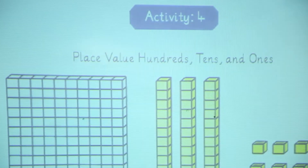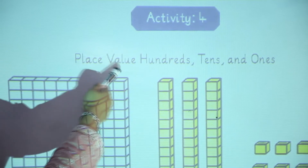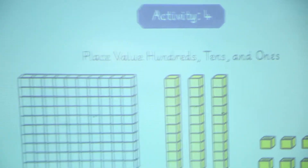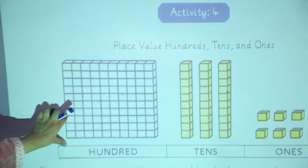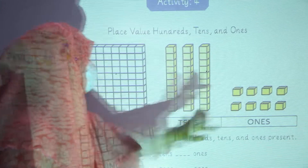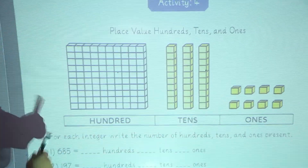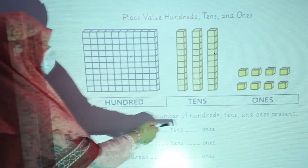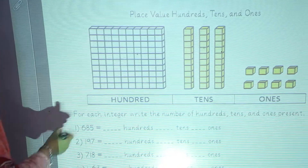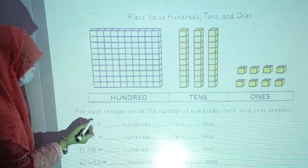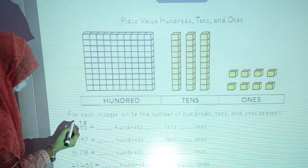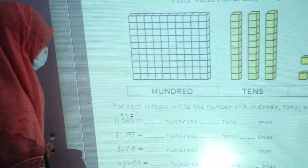Now we are going to start activity number 4: place value — hundreds, tens, and ones. This is the hundreds portion, this is tens, and ones. For each integer, write the number of hundreds, tens, and ones present. Starting from the right side: ones, tens, and hundreds.